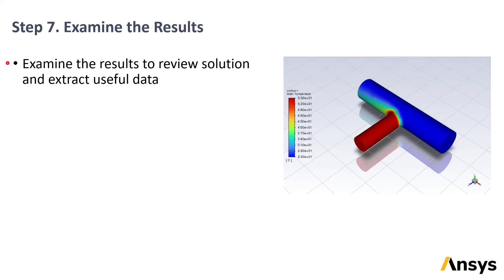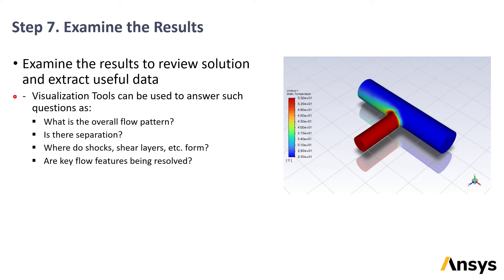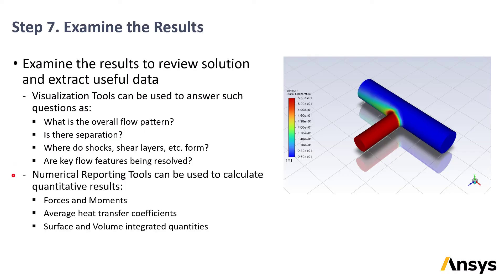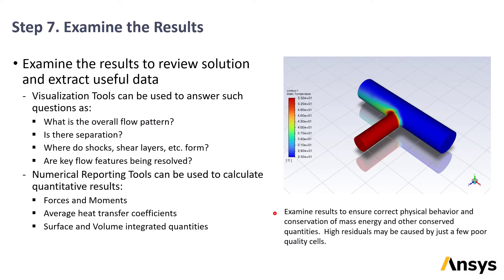Once the solution has been calculated, it's possible to examine the results and extract data — this is known as post-processing. There are two categories: solution visualization, where contour, vector, or streamline plots are made to see what the flow looks like, where flow separation occurs, and where features such as shocks or shear layers form; and numerical post-processing, used to get quantitative results such as forces and moments, average heat transfer coefficients, surface and volume integrated quantities, and flux balances. Simple post-processing such as energy or mass balances is an important sanity check and can help establish whether the solution is correct even when the residual plot shows high values caused by a small number of poor-quality cells.